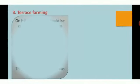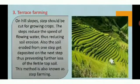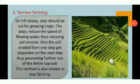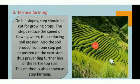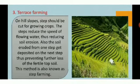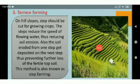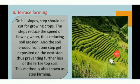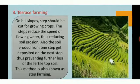The third method is terrace farming. As you can see in the picture, it almost looks like a terrace. Here, we cut these slopes into steps. The reason behind this is that by cutting the slopes into steps, we reduce the speed of rainwater coming down. If the speed is reduced, the washing away of the topsoil is also slowed down. So by this method, soil can also be conserved.